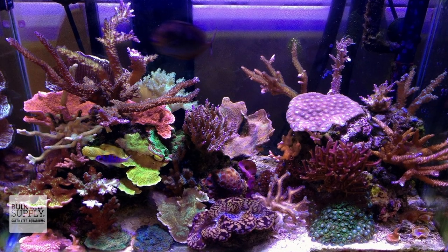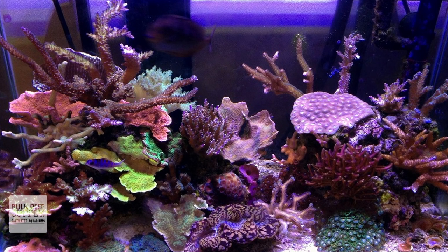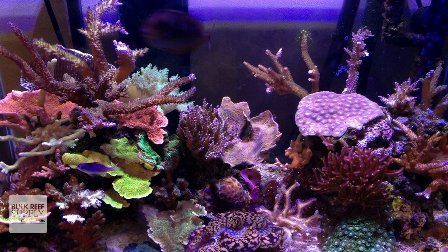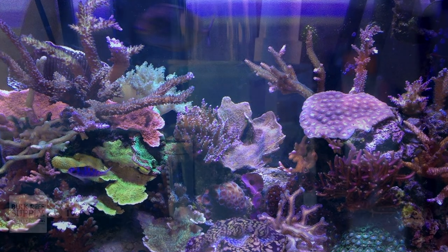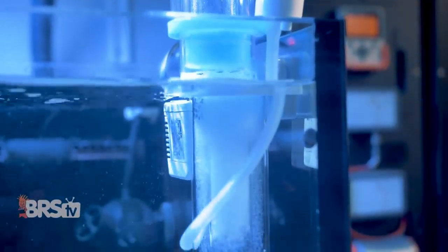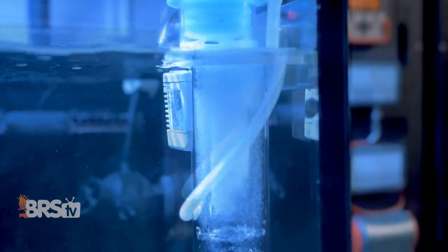For example, while I have in the past kept a 20-gallon mixed reef with a lot of SPS without a protein skimmer, I did have to perform weekly five-gallon water changes to make sure that nutrient levels were always within range. Once I put a protein skimmer on that tank, I found I only had to do the same five-gallon water change every two weeks, which cut down my water changes by half.